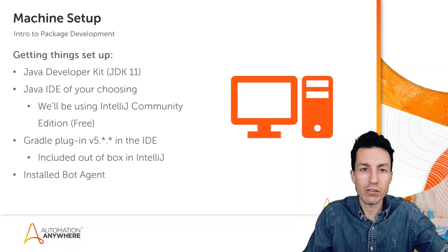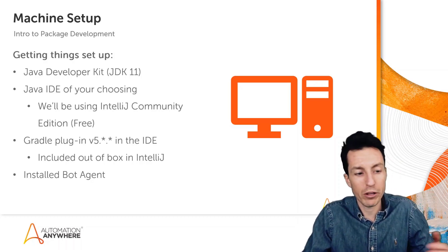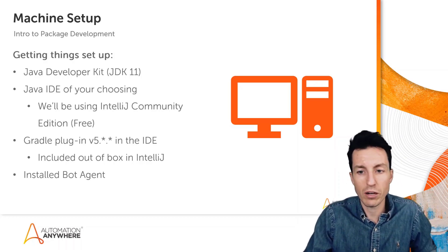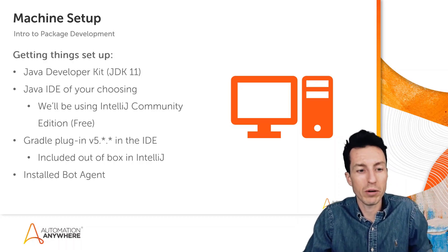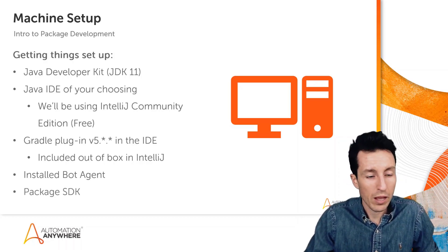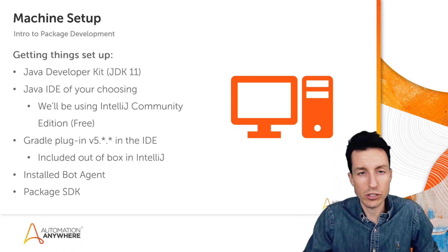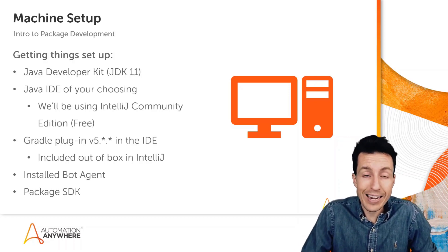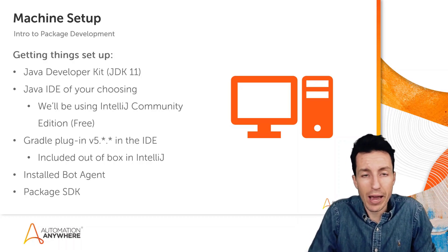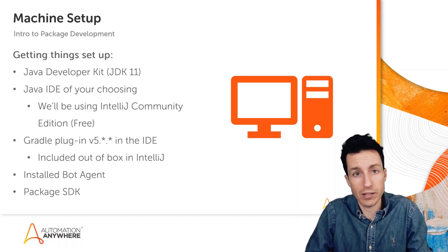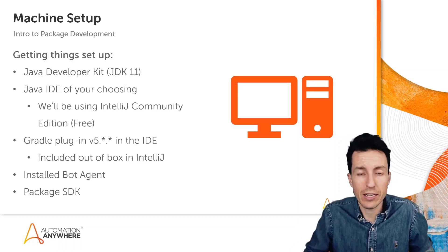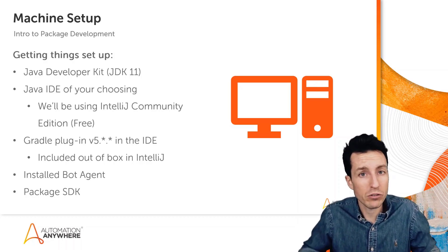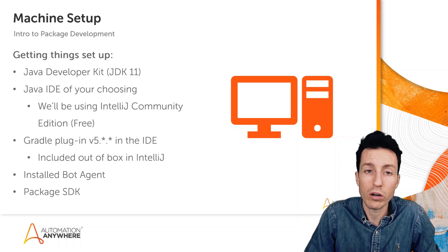You'll also need a bot agent installed — hopefully that's pre-work you've already done. Hopefully you've been doing Automation Anywhere development before, but you want to make sure that bot agent is installed so that as we get into testing, we'll be able to test our own stuff. Finally, we want to make sure we have the package SDK. For this video we'll be using the dot-19 version.